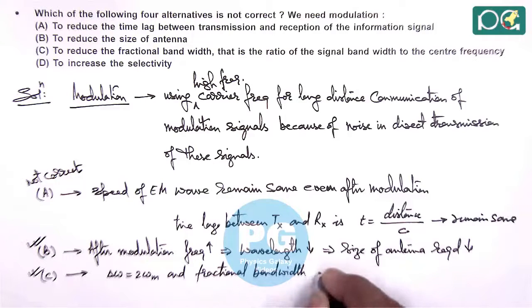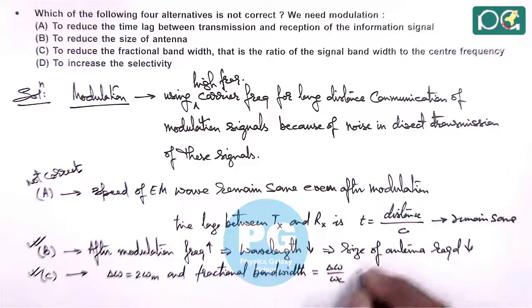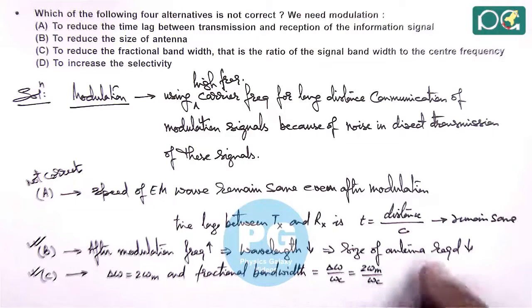Which is given as the signal bandwidth delta omega by omega c, the carrier frequency, so this is 2 omega m by omega c. So as omega c is high, in this situation this bandwidth reduces.